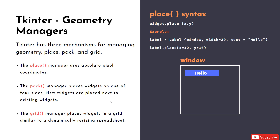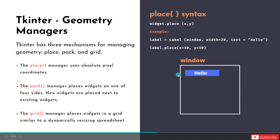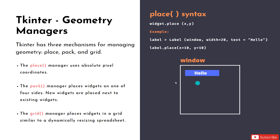Geometry managers are used to place, align, and organize our widgets in the right place. For example, if we want a label to be in the middle of the interface, we can use geometry managers to place it there. Not only labels — we can place buttons, text, or whatever widget we have, wherever we want.